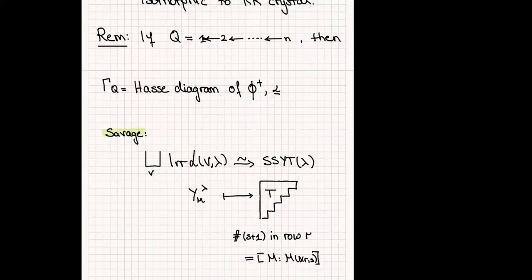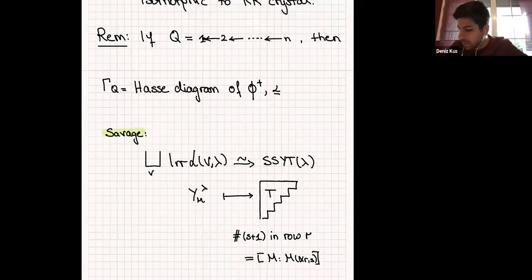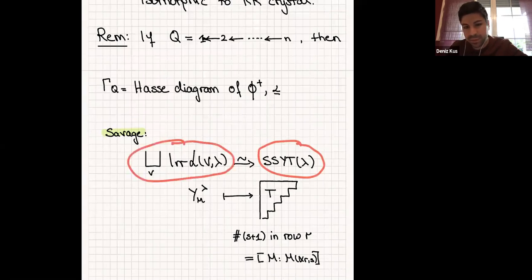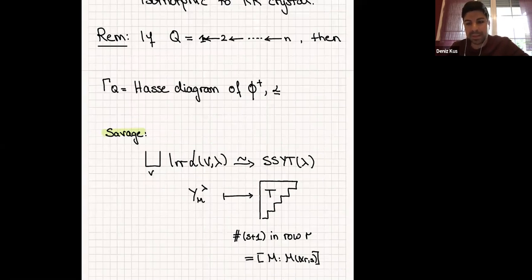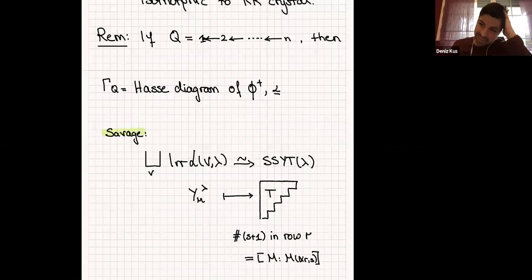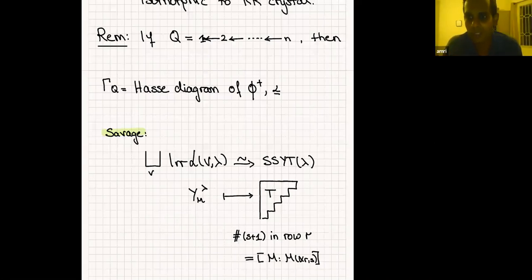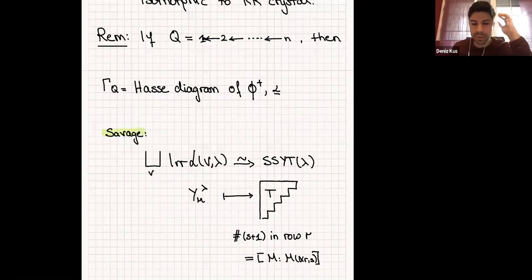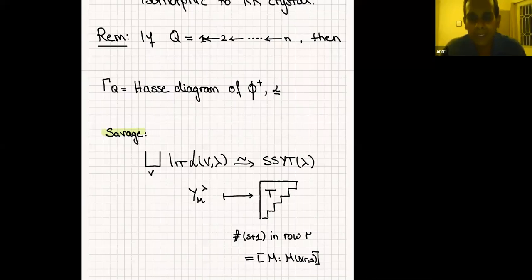For a different orientation of Q, there is no explicit map to semistandard Young tableaux that I know. Both crystals are isomorphic to B(λ), so abstractly an isomorphism must exist, but no direct construction is known without going to the highest weight. This is similar to situations with different path models. On the other hand, one can lift the crystal to an affine crystal using Shimozono's construction on semistandard Young tableaux, and our theorem's part three also lifts this part — our affine structure reduces to Shimozono's in this orientation.